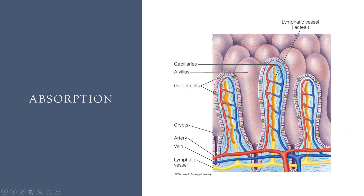Absorption occurs in the lining of the villi. The nutrients cross the cells of the intestine into the transport systems inside. It does us no good to eat food if the nutrients are not going to be absorbed into the body. The digestive tract is one big open tube from mouth to anus. We have some sphincters along the way, but the tube is open. It does us no good if it goes in one end and out the other. The cells, organs, and processes necessary to life are not located inside the GI tract. We have to get the nutrients out of the GI tract and into the transport systems to carry nutrients to cells in the body. That is what absorption is about.